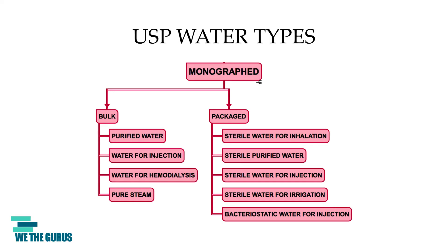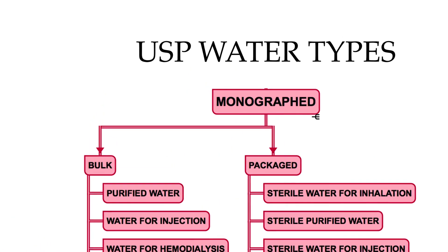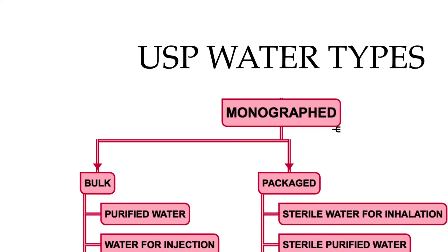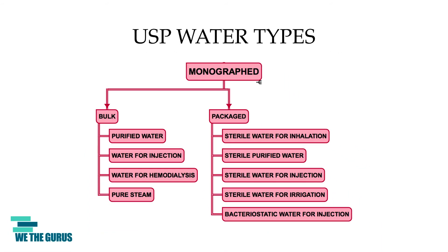Based on packaging, monograph waters can be of two general types. The first is bulk waters — those that are produced on site and distributed from an internal water system. The second type is packaged water — those which are produced elsewhere and packaged for transportation. These are also sterilized to preserve microbial quality throughout the shelf life of the package. As shown in the figure, there are four types of bulk waters and five types of packaged waters. All packaged monograph waters are packaged forms of either purified water or water for injection that has been sterilized to preserve the microbiological properties.